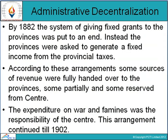Regarding administrative decentralization: by 1882, the system of giving fixed grants to the provinces was put to an end. Instead, the provinces were asked to generate a fixed income from provincial taxes. According to these arrangements, some sources of revenue were fully handed over to the provinces, some partially, and some reserved for the Centre. The expenditure on war and famines was the responsibility of the Centre. This arrangement continued till 1902.